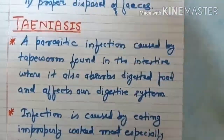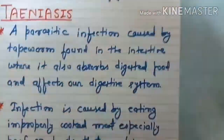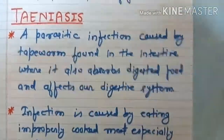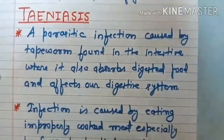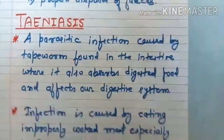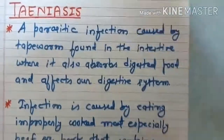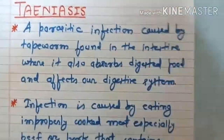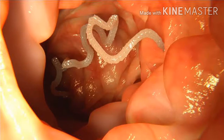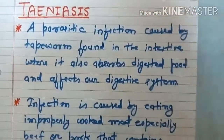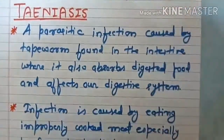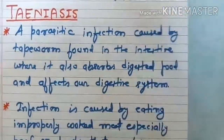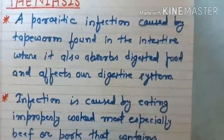Next is taeniasis — a parasitic infection caused by tapeworm, found in the intestine where it also absorbs digested food and affects our digestive system. This tapeworm lives in our intestine, absorbs our digested food, and heavily affects our digestive system.